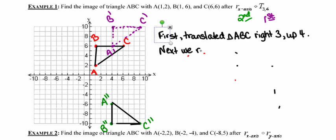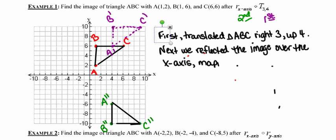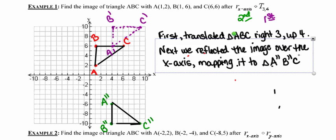Next, we reflected the image over the x-axis, which ended up mapping it to triangle A double prime, B double prime, C double prime. So that's one way of describing the sequence of transformations that we performed on this triangle.